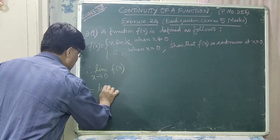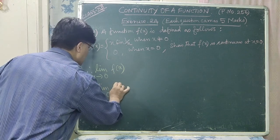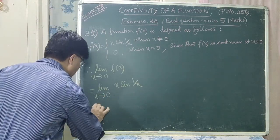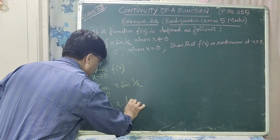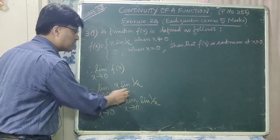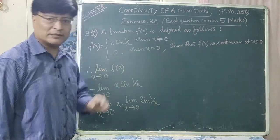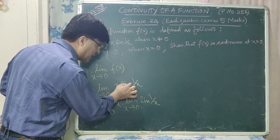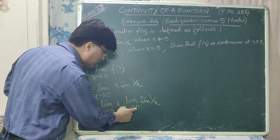Just find out limit x→0 of f(x). The solution is: limit x→0 f(x) = limit x→0 [x·sin(1/x)]. We can separate the limit, which equals limit x→0 (x) into limit x→0 (sin(1/x)). Now this sin(1/x) is not the standard limit form, so we have written: limit x→0 (x) multiplied by limit x→0 sin(1/x).